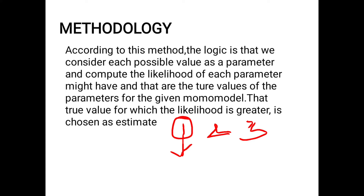We find the fixed point on the y-axis for each value. Among these, whichever has the highest likelihood is considered the maximum likelihood estimate. So in this method, we consider all values as parameters, find the likelihood of each, and the one with the greatest value is chosen as the estimate — that is, the maximum likelihood estimate.